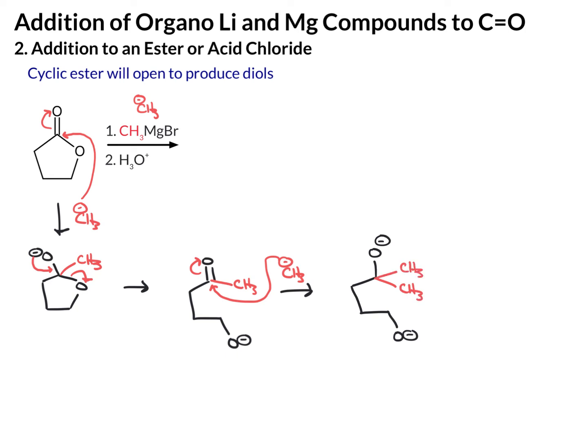Now we're at our tetrahedral intermediate. We have our O minus from the oxygen that was part of the carbonyl, and the second O minus is from the leaving group. At this point the reaction will be done — you'll add acid, and the acid will provide protons. This will protonate one, protonate the other. Our final product — you could draw this in a more linear fashion if you want — is a diol alcohol.